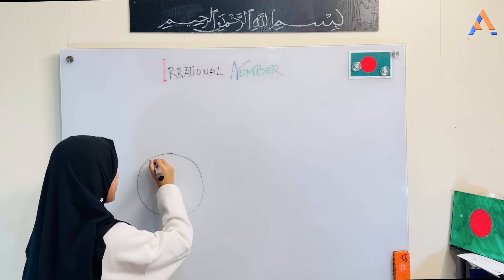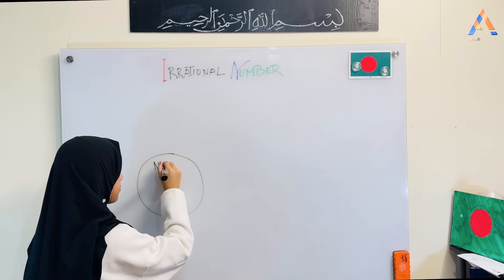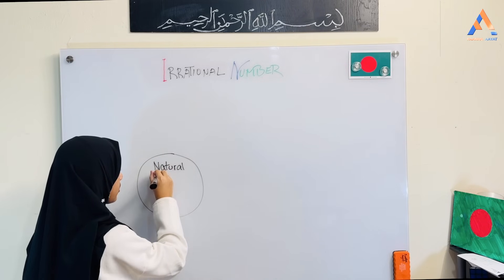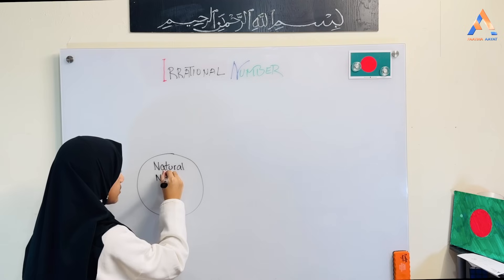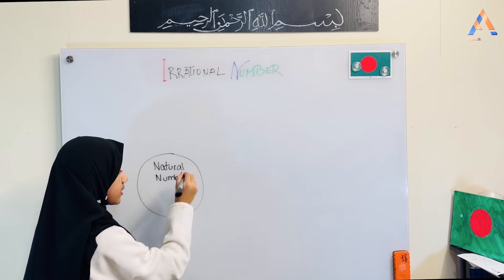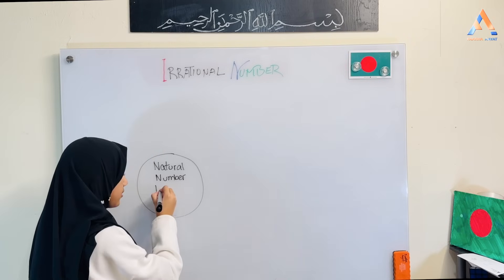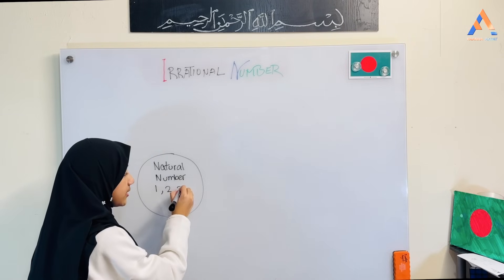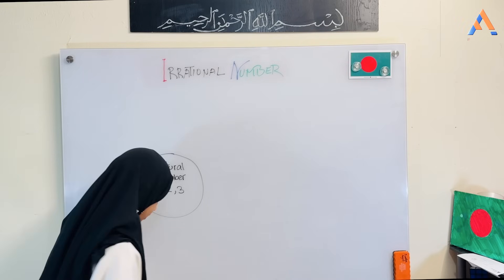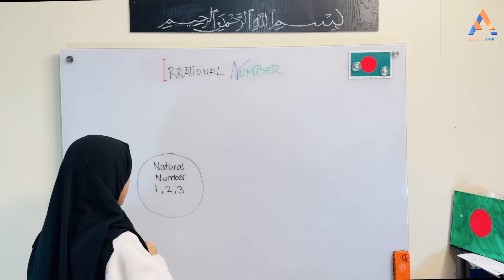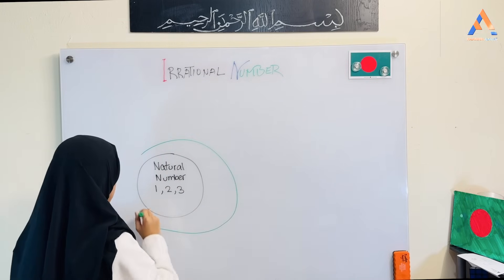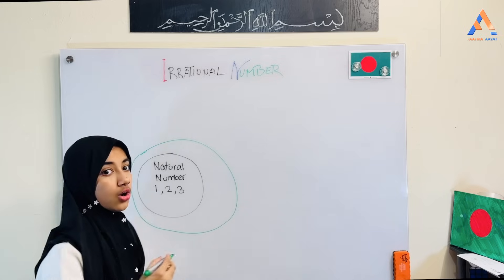The next one is natural numbers. For example, natural numbers: one, two, and three. And then we will write the whole numbers.